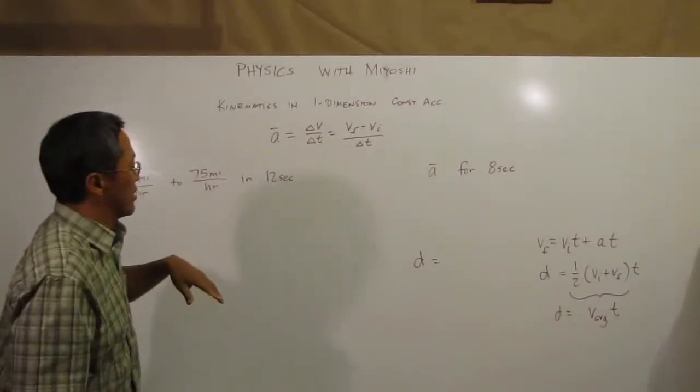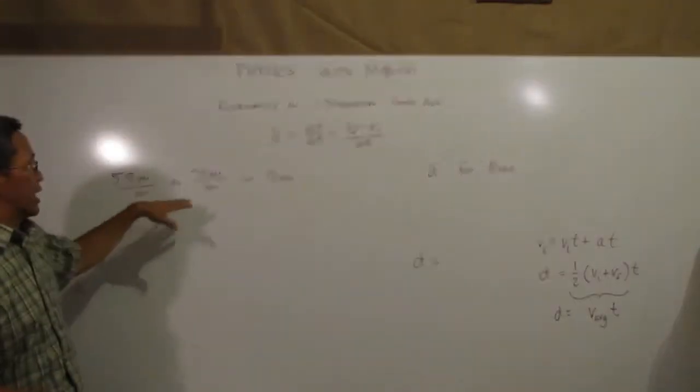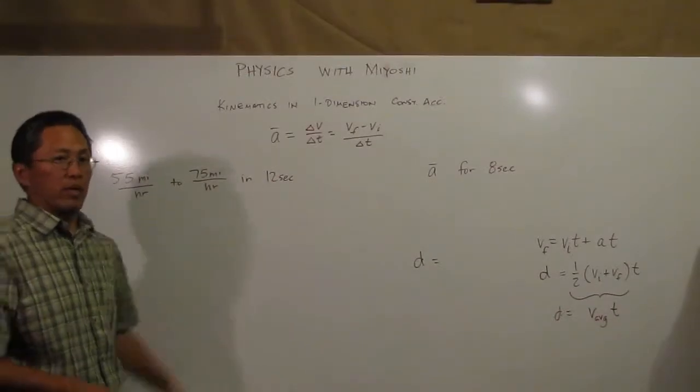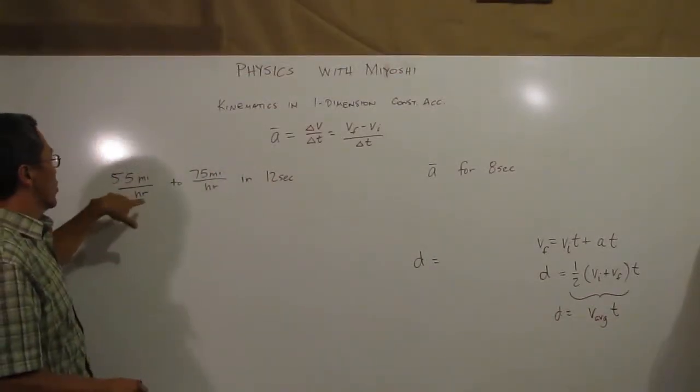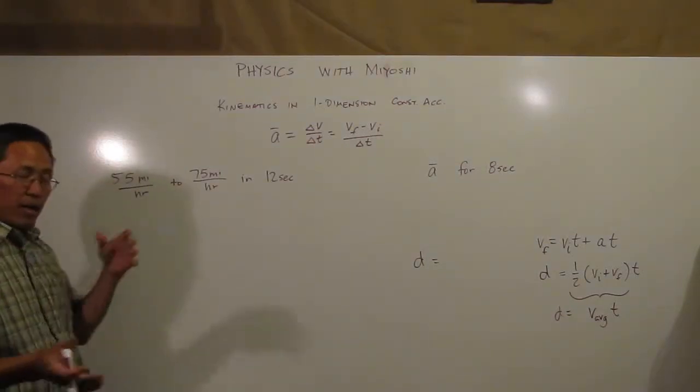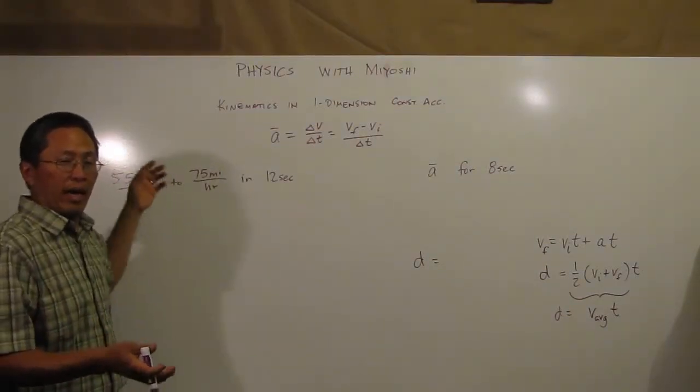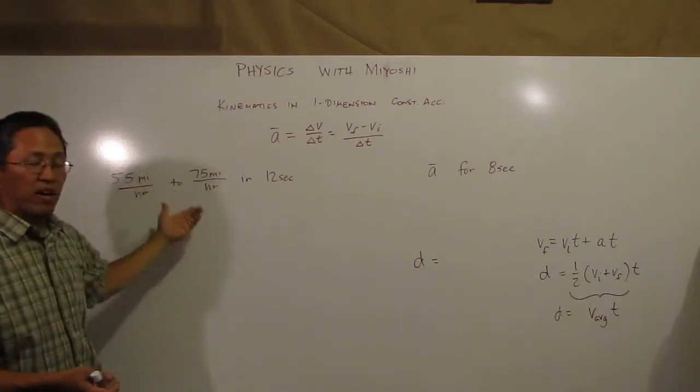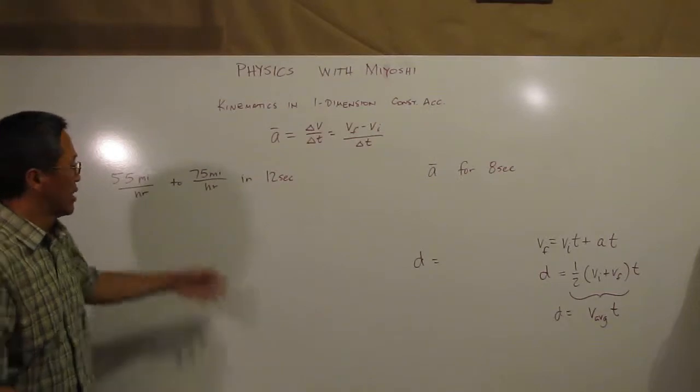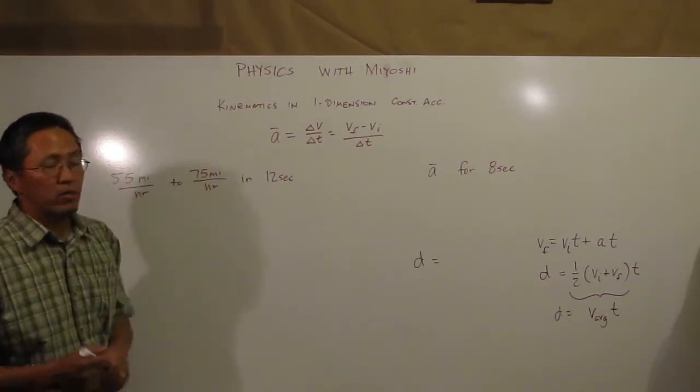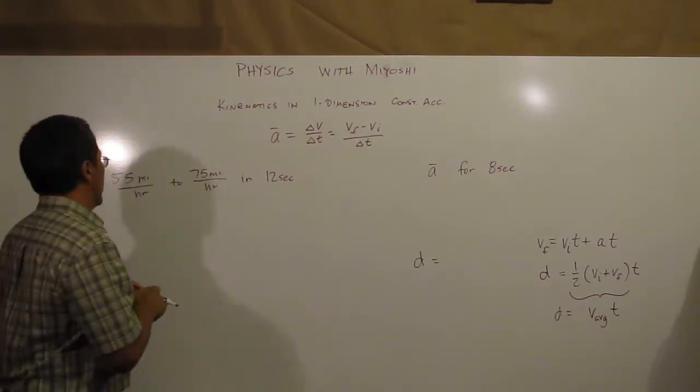But we're going to do something a little bit different here. Instead of starting with zero as our initial or having zero as our final velocity, let's look at what the acceleration would be if I'm driving my car down the road and I went from a 55 mile an hour speed limit to a 75 mile an hour speed limit. What if I want to accelerate in 12 seconds? What will that give me?